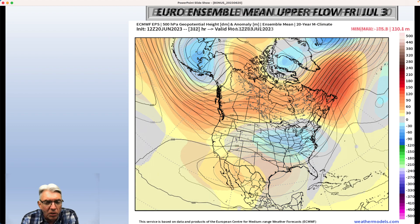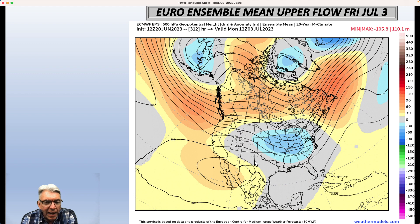But then by July 3rd, the European Ensemble mean actually shows this heat ridge backing up to the west and troughiness redeveloping over the eastern part of the United States. Well, how can that happen?